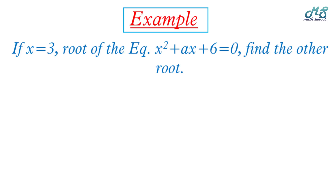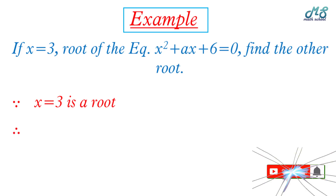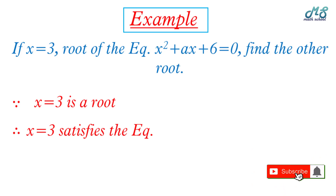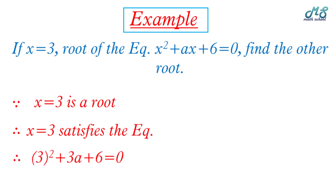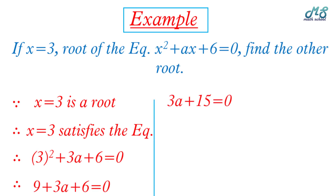Example: if x equals 3 is a root of x squared plus ax plus 6 equals zero, find the other root. First find the value of a. Since x equals 3 satisfies the equation, substitute x equals 3: 3 squared plus 3a plus 6 equals zero, giving 9 plus 3a plus 6 equals zero, so 3a plus 15 equals zero, thus 3a equals negative 15, and a equals negative 5.